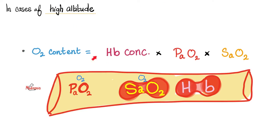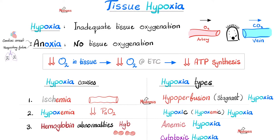High altitude sickness — what's going to happen to these parameters? At high altitudes, there is less oxygen because the pressure of gases goes down. So PaO2 goes down, SaO2 goes down, and oxygen content goes down. Hemoglobin concentration — initially no change. But if you've been living on top of a mountain for months and years, EPO will go up and hemoglobin concentration will go up. Overall, oxygen content is usually lower, but later it might normalize due to this compensatory response. Remember, tissue hypoxia is caused by ischemia, hypoxemia, and hemoglobin anomalies, and the types of hypoxia will be the topic of the next video.